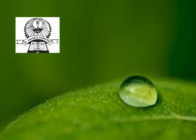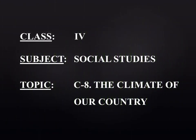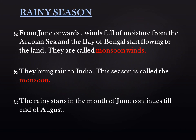Hello children, welcome to the online class. This is Gaite speaking. Class 4, Social Studies, Chapter 8: The Climate of Our Country. We already started this chapter — we studied about the difference between weather and climate, the factors affecting climatic conditions, and the three seasons: summer, rainy, and winter. We discussed summer season previously. Today I am explaining about the rainy season.